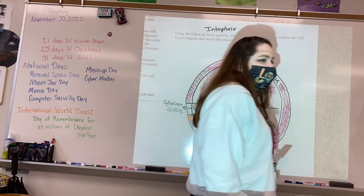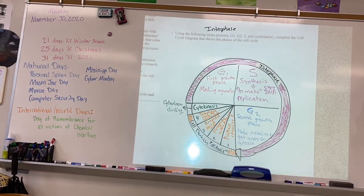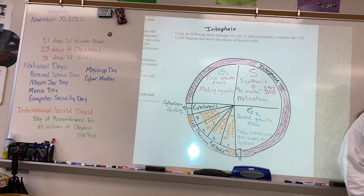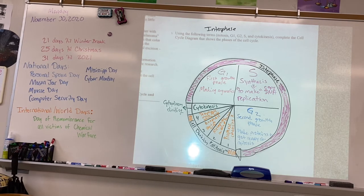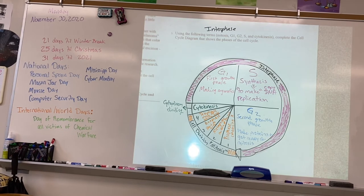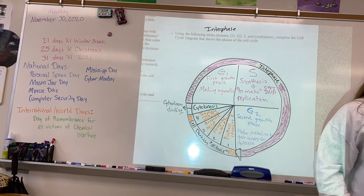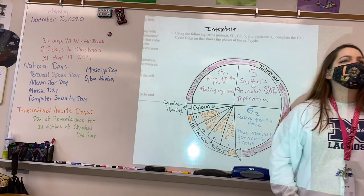On the back of the worksheet there is a table with empty boxes. For each box, write down exactly what is happening during each phase using your fill-in-the-blank notes from before Thanksgiving break. I'll give you about five to ten minutes to work on this independently, then we will go over it before you leave. Write as much information as you can — there are multiple things happening during each stage.